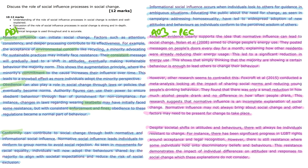Each of the evaluative paragraphs follows a structured point-explained consequence format, offering the depth of explanation required. For example, when discussing normative influence, the answer presents research evidence such as Nolan et al.'s 2008 study, then counters this with contradictory evidence from Foxcroft et al. (2015), indicating that normative influence may not always be sufficient to bring about social change. Both of these demonstrate a deep understanding of the topic, acknowledging the limitations of certain theories while also highlighting their significance in specific contexts.